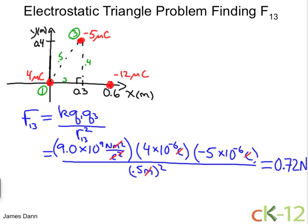Now what about the direction? Well, opposite charges attract. By the way, that's why we have this minus sign right here, which I should have included. The minus sign indicates it's an attractive force, but the magnitude is 0.72 newtons. So what about the direction? Opposite charges attract, therefore I know that the force vector F13 will point in that direction.